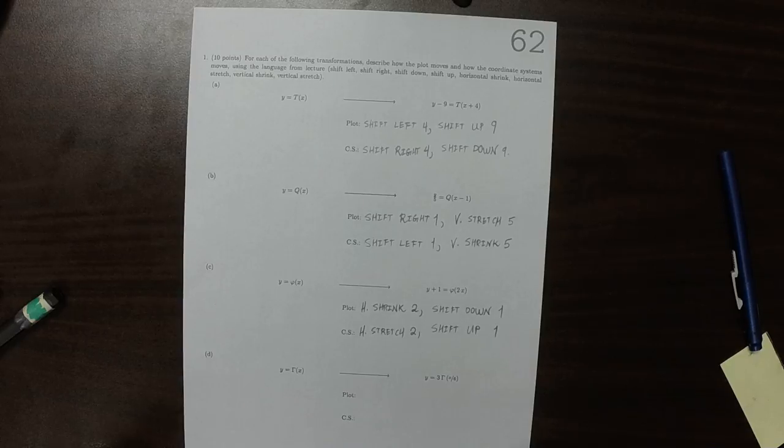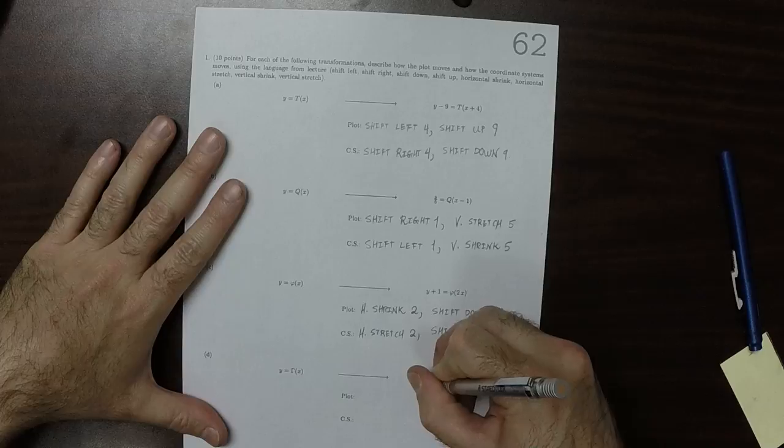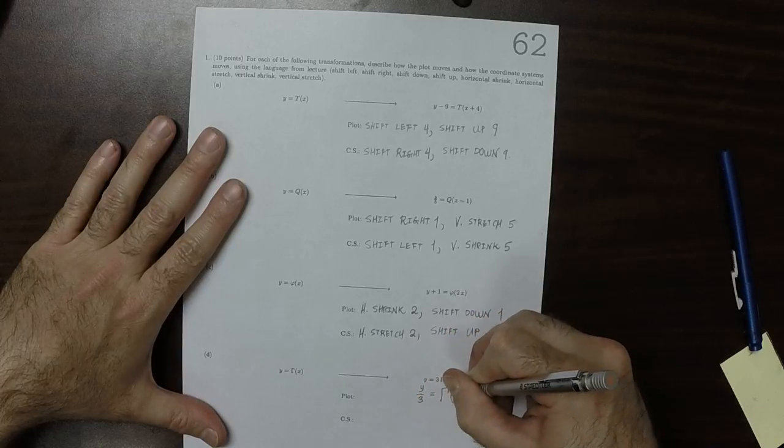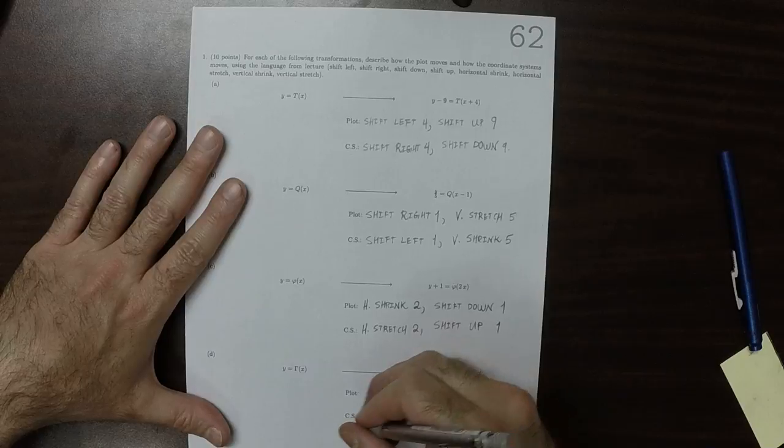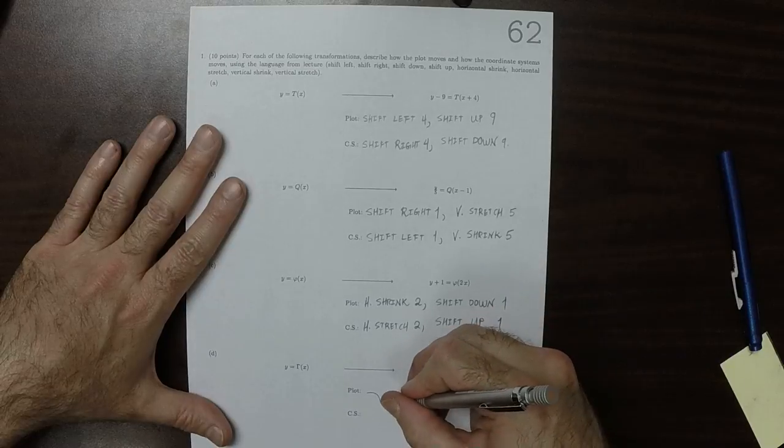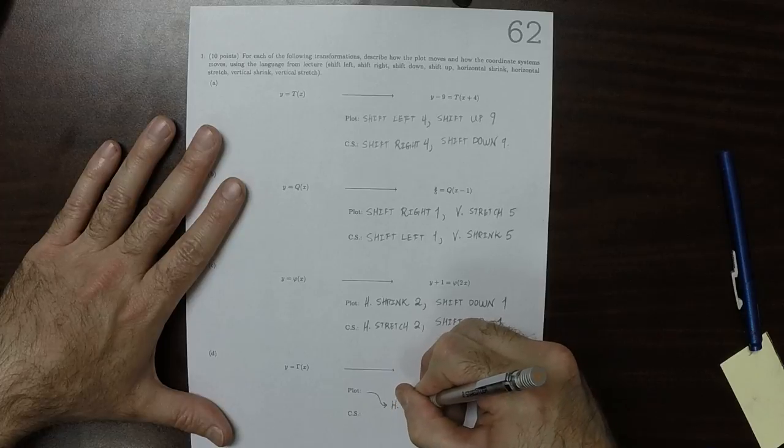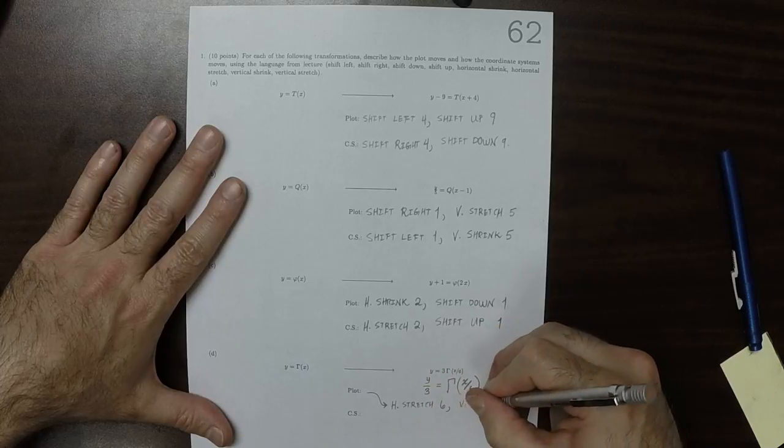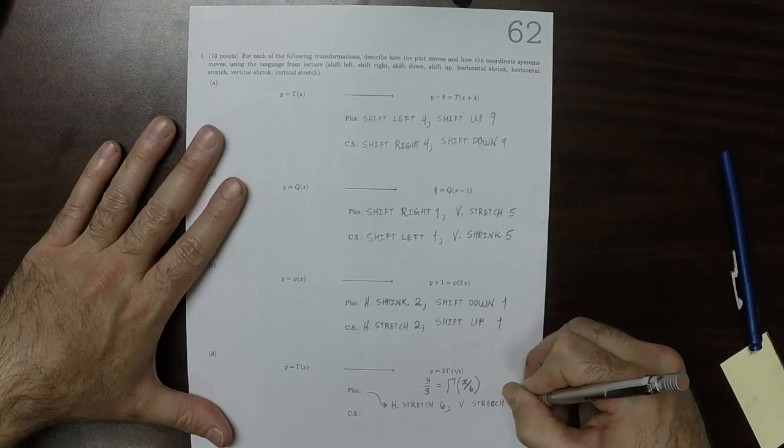Okay, so this one, best probably to rewrite it as y over 3 equals gamma of x over 6, so that the plot will undergo a horizontal stretch by a factor of 6 and also a vertical stretch by a factor of 3.